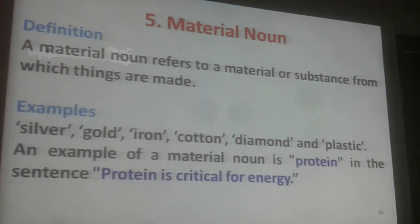A material noun refers to a material or a substance from which things are made. For example: silver, gold, iron, cotton, diamond, plastic, etc.